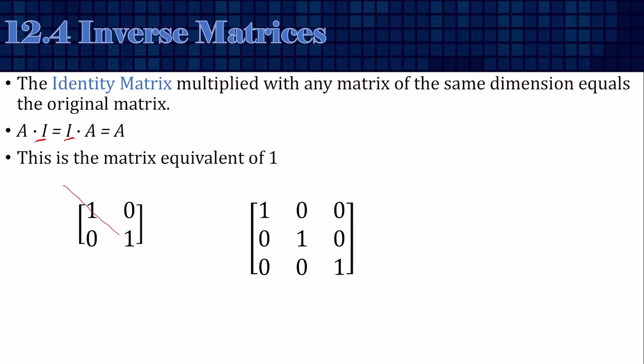Notice we have 1s on the downward diagonal, and everything else is a 0. It is always square, the downward diagonal is 1s, everything else is a 0.